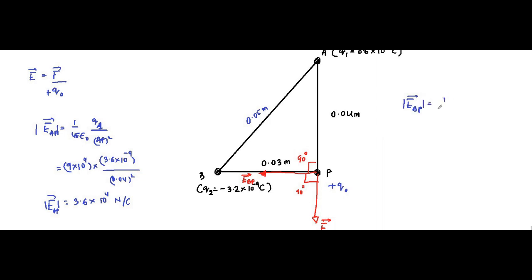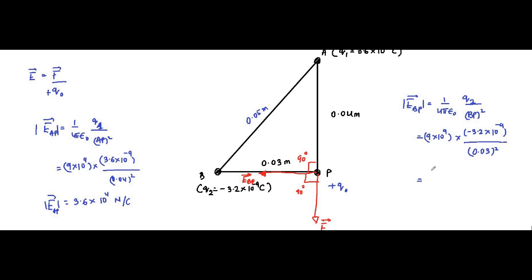For EBP: EBP = (1/4πε₀) × (q2 / BP²) = 9×10⁹ × (3.2×10⁻⁹) / (0.03)², which comes out to approximately 1.8×10⁴ N/C. That is the magnitude of EBP.